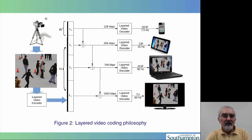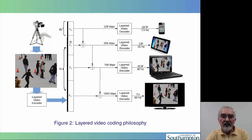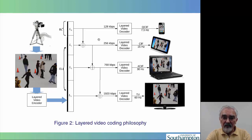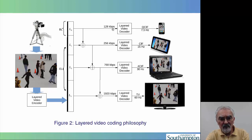The video signal is captured by the camera at its full resolution as seen here at the left hand side, and then it's encoded and compressed into a number of hierarchical layers. The base layer is obviously the most important layer because without decoding the base layer, the enhancement layers cannot be decoded since they depend on the base layer. This has numerous benefits, in particular for heterogeneous equipment. Smartphones, for example, have a very small screen and hence don't require a high resolution video sequence and cannot afford a high bit rate. By contrast, at the other end of the scale, a high resolution high definition TV screen would require extremely high bit rates.